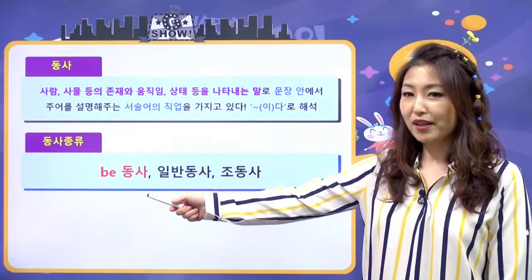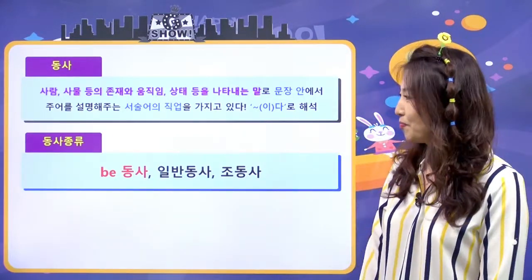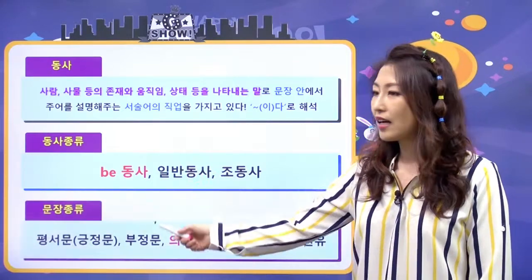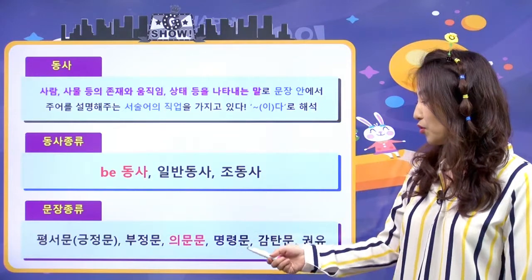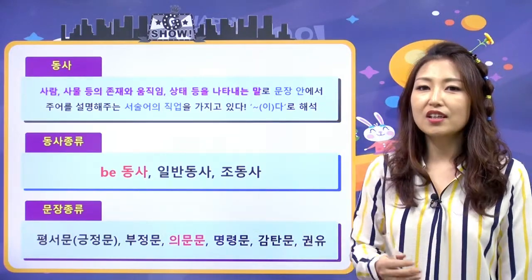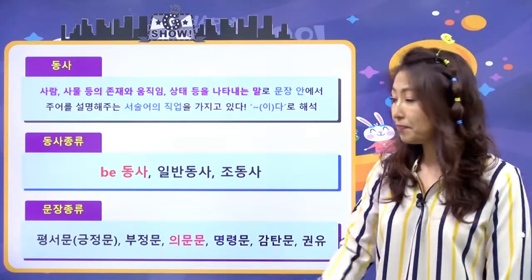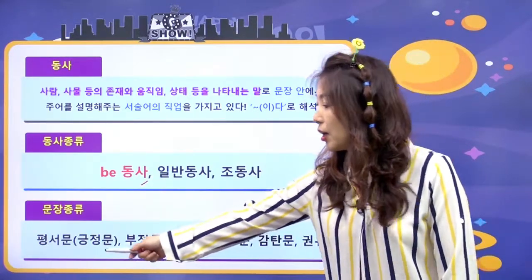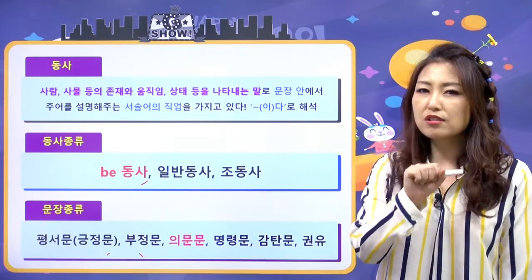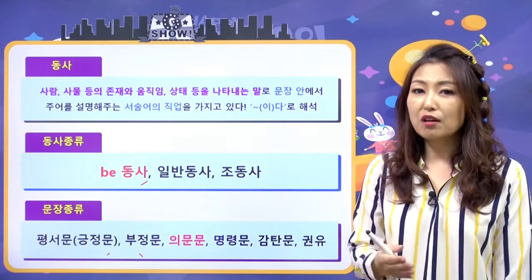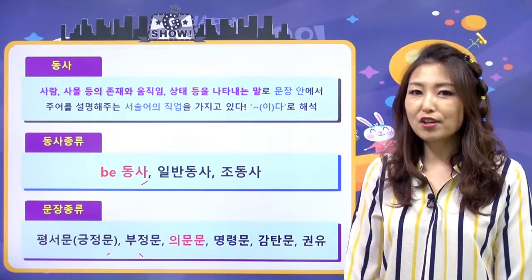비동사는 여전히 빨간색이네요. 비동사 계속 할 거예요. 동사가 들어가는 문장의 종류는 평서문, 부정문, 의문문, 명령문, 감탄문, 권유 이런 것들이 있다. 지난 시간에 비동사의 평서문, 부정문 만드는 법, 부정문 줄여쓰는 법, 비동사와 인칭 대명사 줄여쓰는 법을 살펴봤고요.